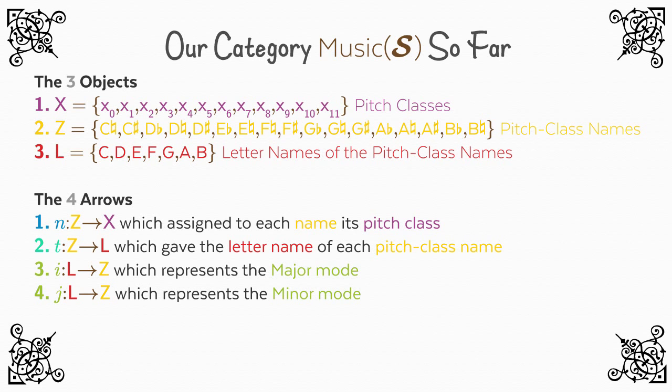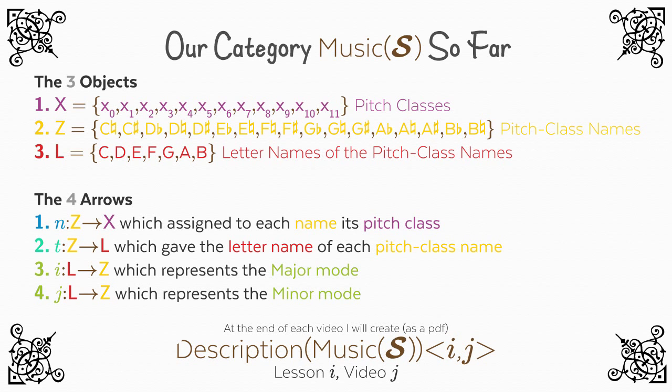At the end of each lesson, I'll create a document that describes all the maps and objects in Music S up until that point. I will call this document 'Description of Music S, IJ,' where the index stands for the category at the end of lesson I, video J. I will create a document for the end of each video, even if nothing has changed, so that there's no confusion about where we are.